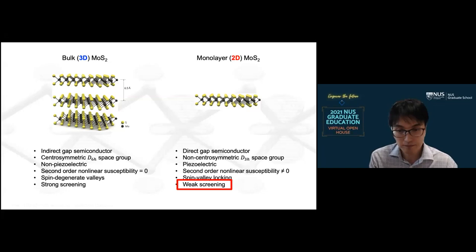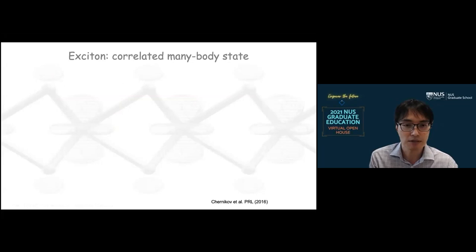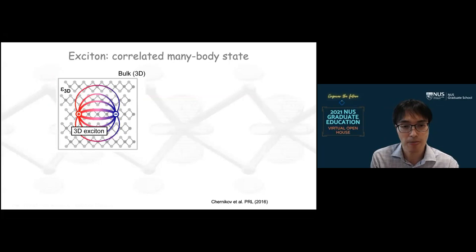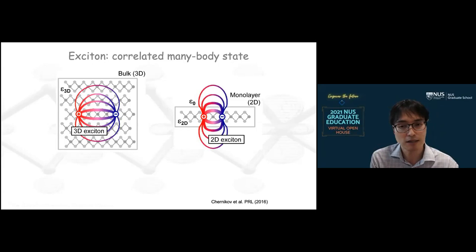So what is it about this weak screening that makes it special? You start to see the importance of it when you start to think about the charges that are living inside a material. When you have an electron and a hole, which is a missing electron, it's a quasi-particle of a missing electron having a positive charge, they can form a bound state, and this bound state is called an exciton, and it is an example of a many-body state. It's a quasi-particle consisting of two particles. Such a quasi-particle can live in this three-dimensional solid, but they can also live in a two-dimensional solid.